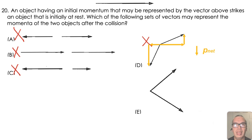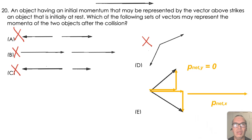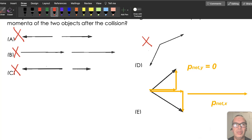The only case with zero y-momentum and positive x-momentum that is close to the initial momentum of the system is Option E.